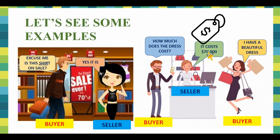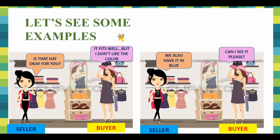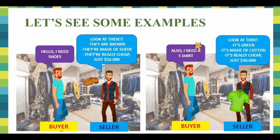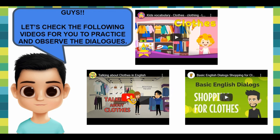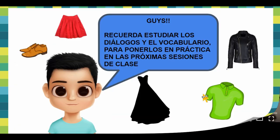These are some questions: 'How much does the dress cost?' — 'It costs seventy thousand pesos.' More examples: 'Hello, I need shoes. Look at these — they are brown, they are made of suede, and they are really cheap, just fifty thousand pesos.' At the end of the presentation you will see three videos. Please check the videos to practice, to listen to the correct pronunciation of the words, and to observe the dialogues. Just practice and be ready for the next class!